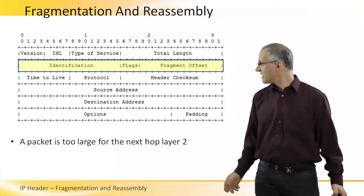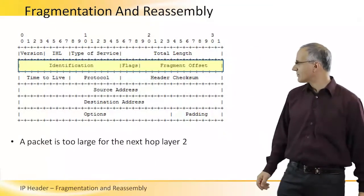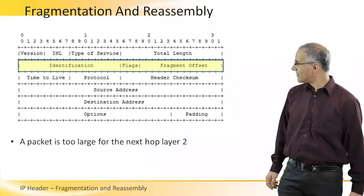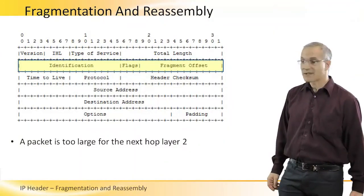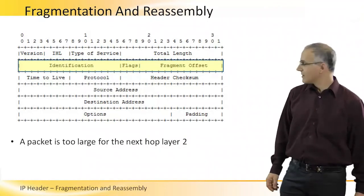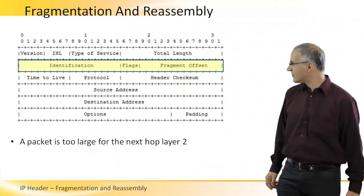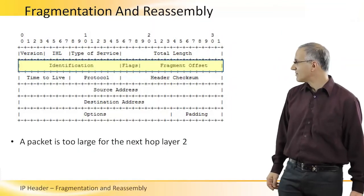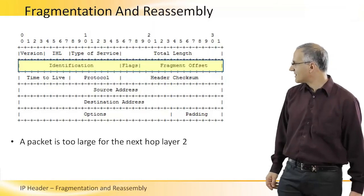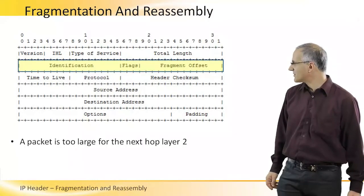To do this, it needs these three fields in the second word. The identification field identifies all the fragments that belong to the same packet. The flags indicate whether the fragment is the last or an intermediate segment, and the offset tells the offset of this segment from the beginning.